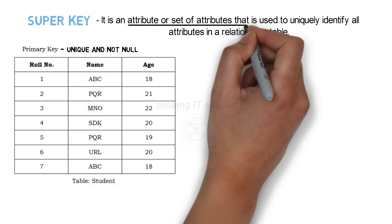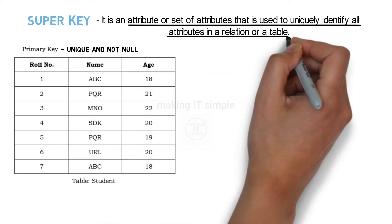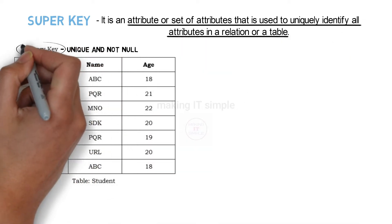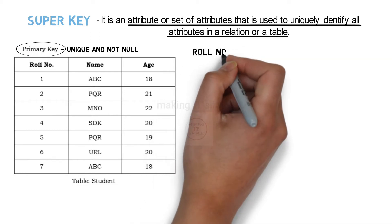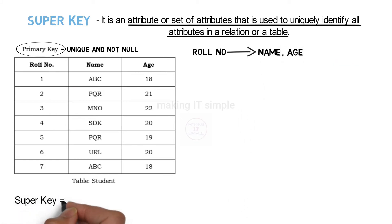The definition states: an attribute or set of attributes which can uniquely identify all attributes of a table. We know that using a primary key we can identify unique tuples or rows. So using role number we can identify the name and age of any student record or row. Therefore, role number can be a super key, because using it we can identify all other attributes, which means we can identify unique rows in the table.